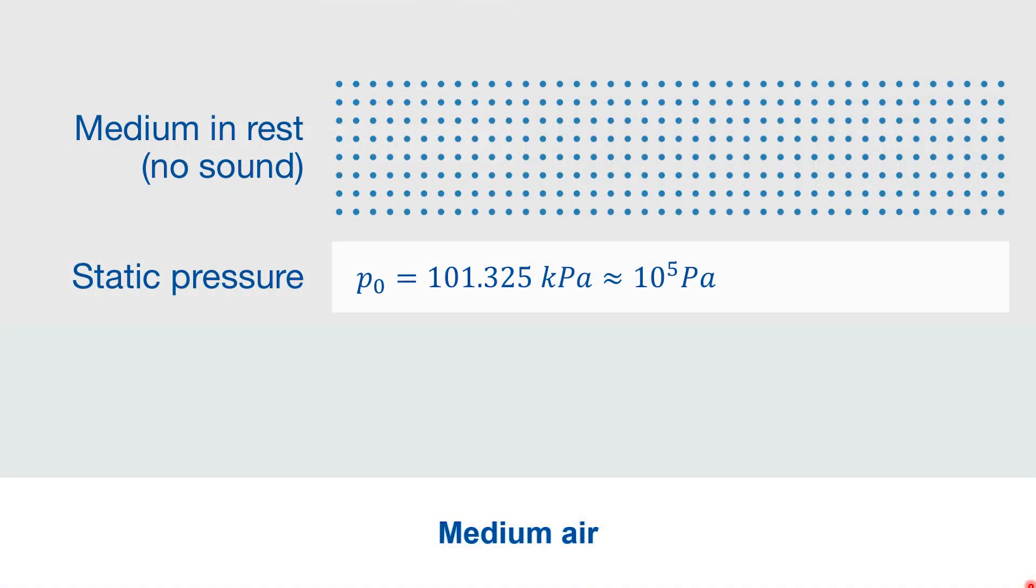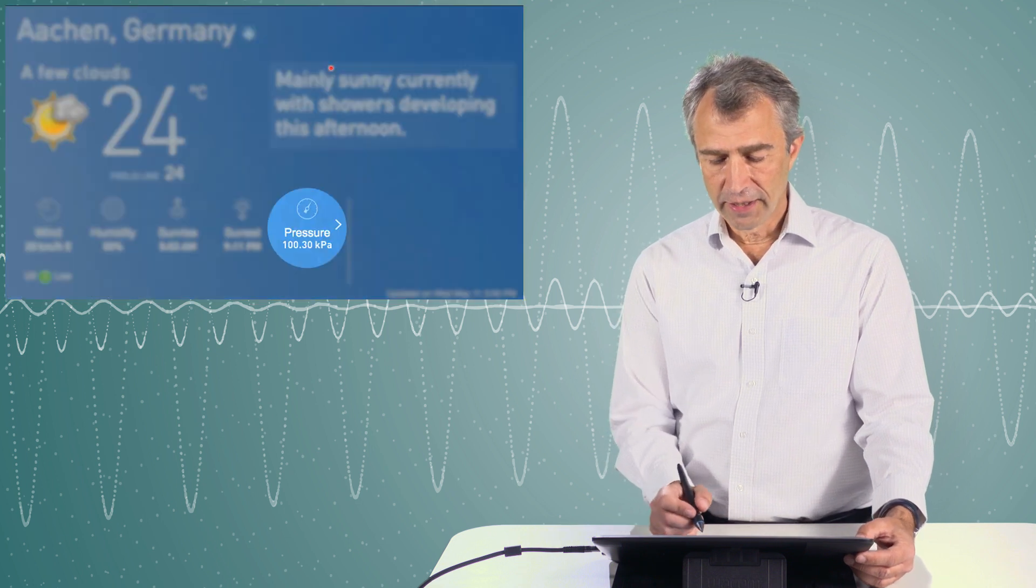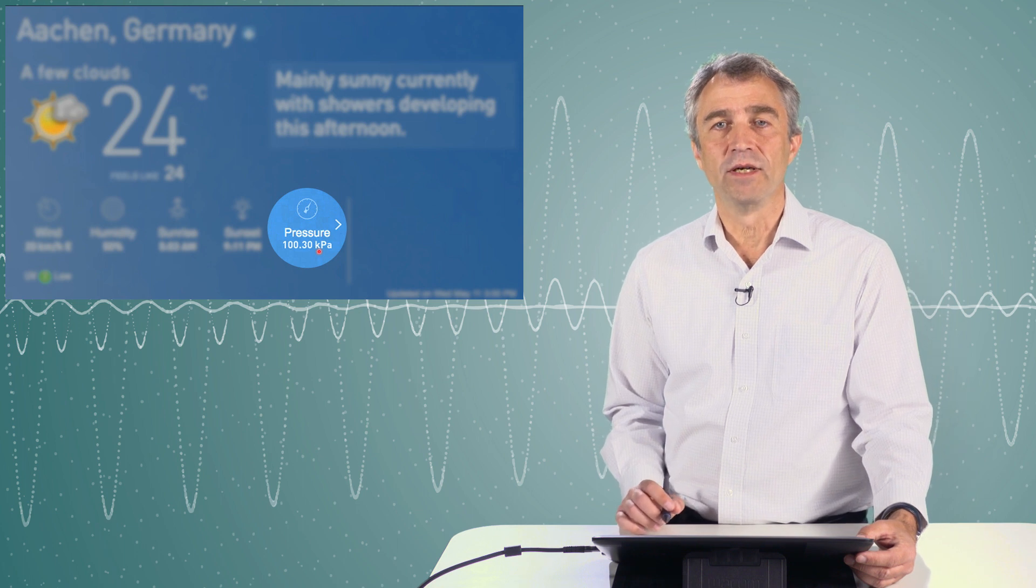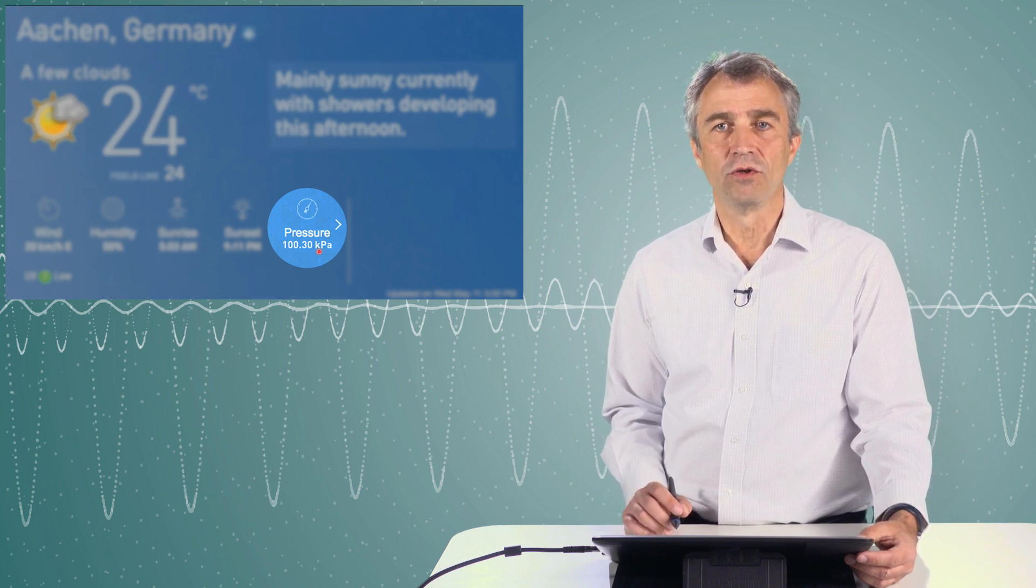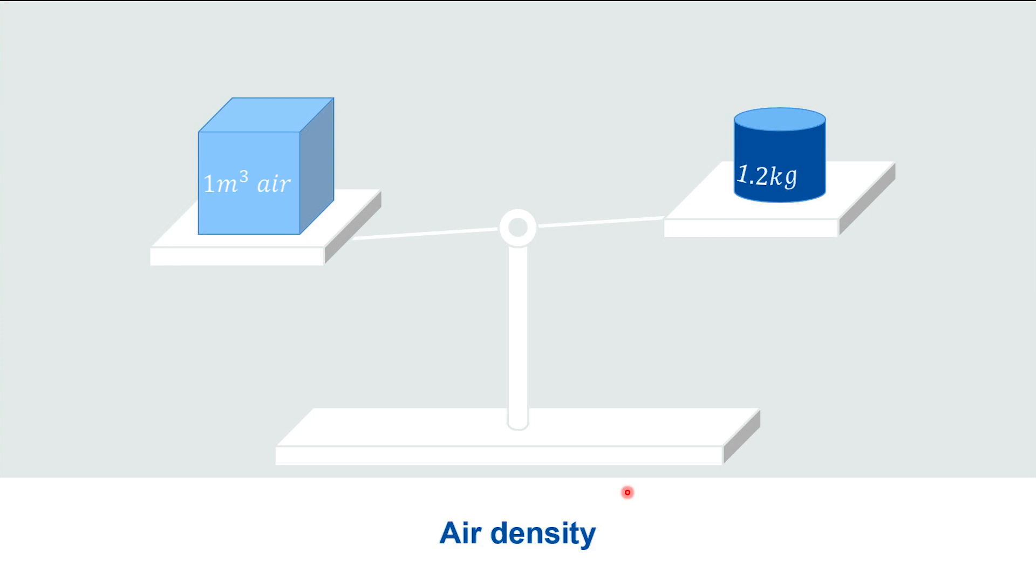A medium in rest such as air is illustrated in the upper picture by the blue bubbles. These blue bubbles illustrate the molecules of air, nitrogen and oxygen. In rest this medium is characterized by the static pressure. Everybody knows from the weather forecast what the static pressure is. Indicated in this case is 100.3 kilopascals which determines the certain weather condition of low or high pressure. The second quantity is the static density. This means how heavy air is. We can weigh an amount of air, let's take one cubic meter and the weight is about 1.2 or 1.3 kilograms.